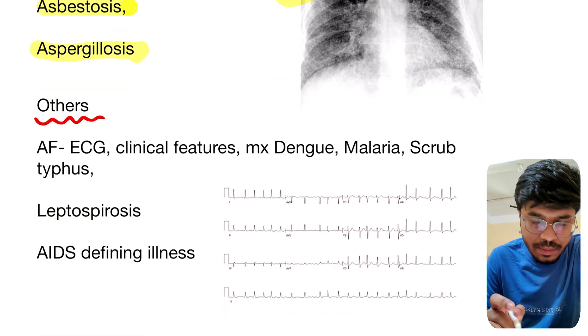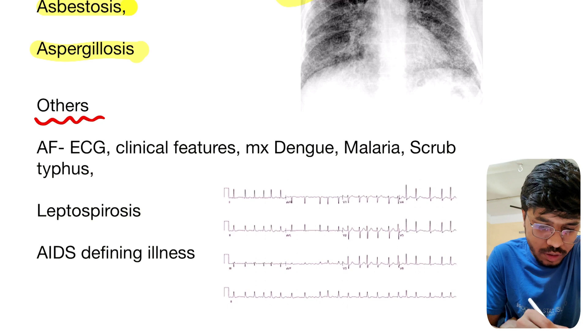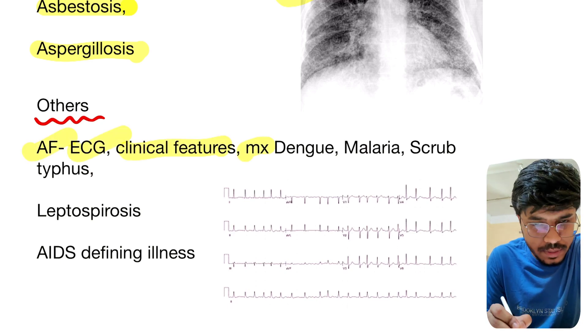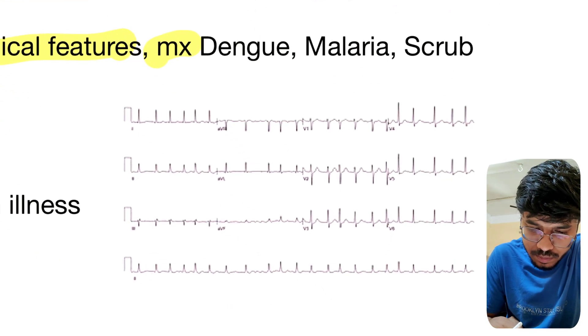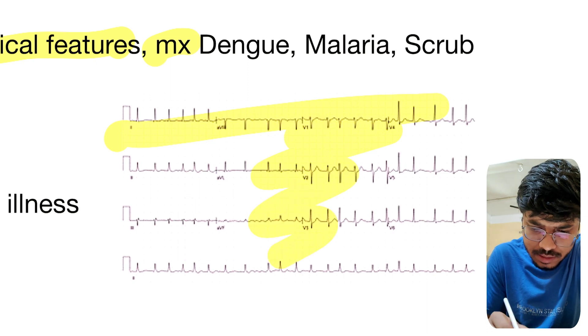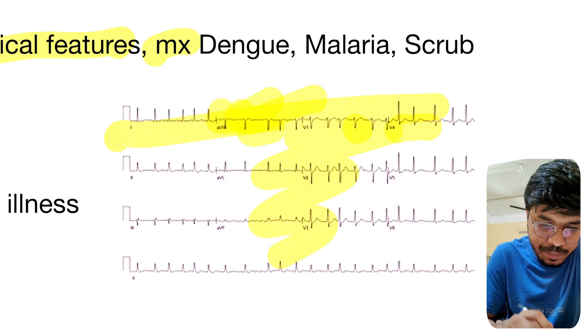In the previous video I forgot about atrial fibrillation — this is a very very important topic. Atrial fibrillation: ECG, clinical features, and management. This is the ECG of atrial fibrillation — here P wave is absent and there is an irregular RR interval.